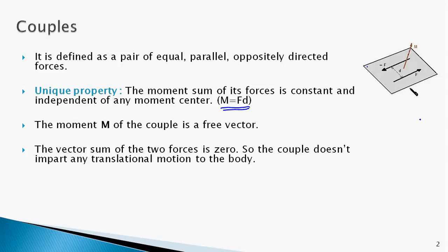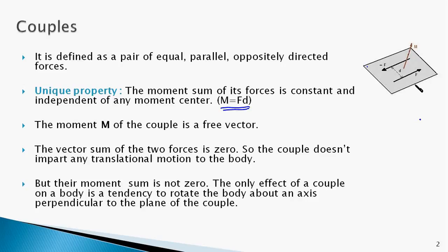The vector sum of the two forces is zero — both forces have a magnitude of F and opposite directions, so their resultant is zero. Therefore, the couple cannot impart any translational motion to the body. The only effect the couple has on the body is to rotate it about an axis that is perpendicular to the plane containing the couple.